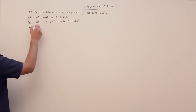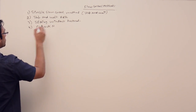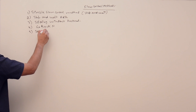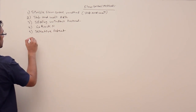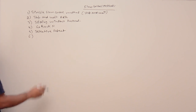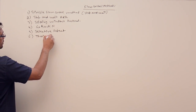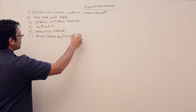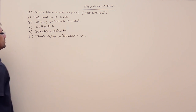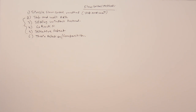Then we will discuss about go-back-N, then selective repeat. After selective repeat we are going to discuss about the comparison between all these flow control methods.